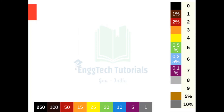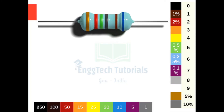Next we will solve an example of a 6 band resistor. For a 6 band resistor, the first three colors represent the digit, the fourth color represents the multiplier, the fifth color represents the tolerance level, and the last color represents the temperature coefficient. The temperature coefficient reference is given below. So the first color is orange — orange corresponds to digit 3, so we write 3. The next color is red — red corresponds to 2, so we write 2. The next color is green — green corresponds to 5, so we write 5.